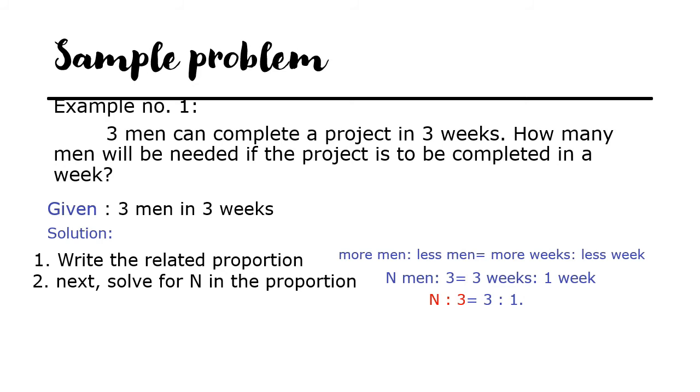Let us solve for N in the proportion. N equals 3 times 3. That is 9, then divided by 1, the answer is still 9. The value of N is 9. Therefore, the answer is 9 men are needed to complete the project in one week.